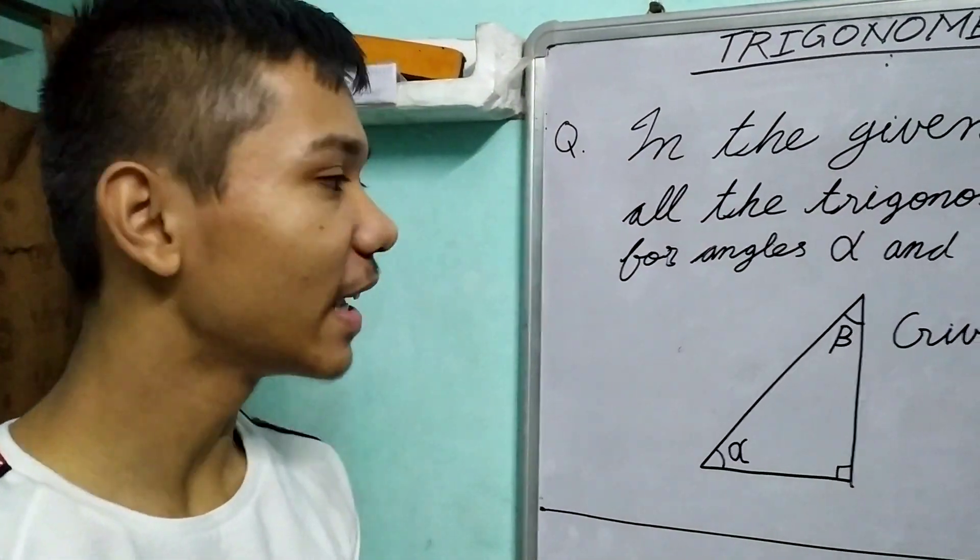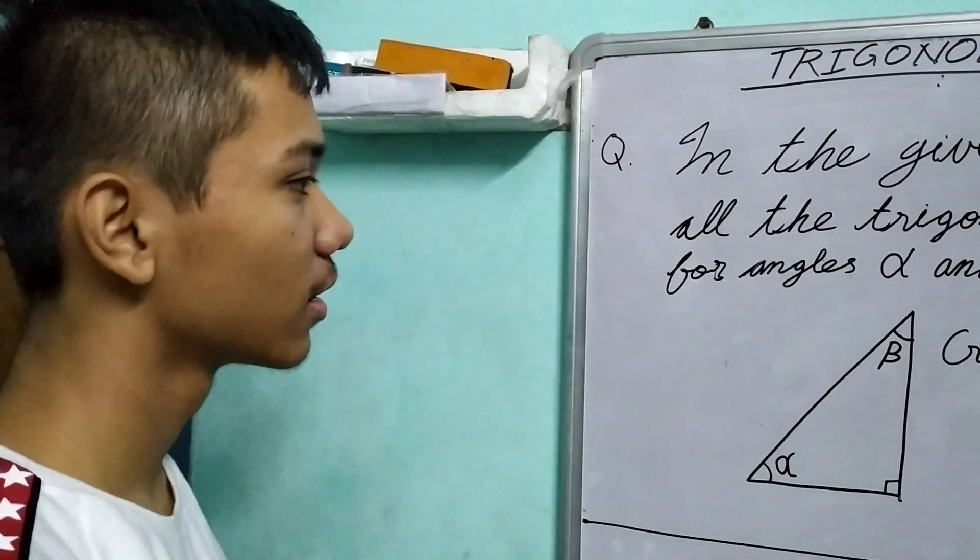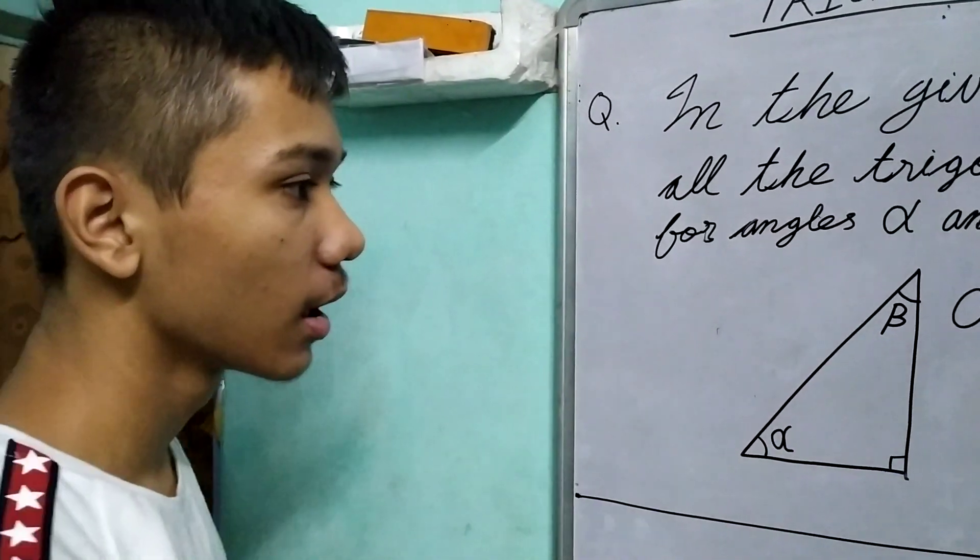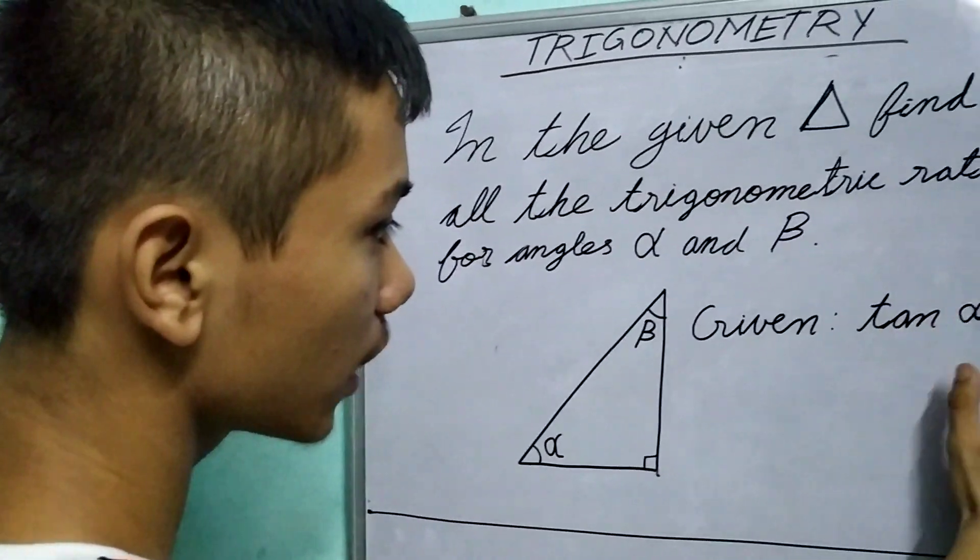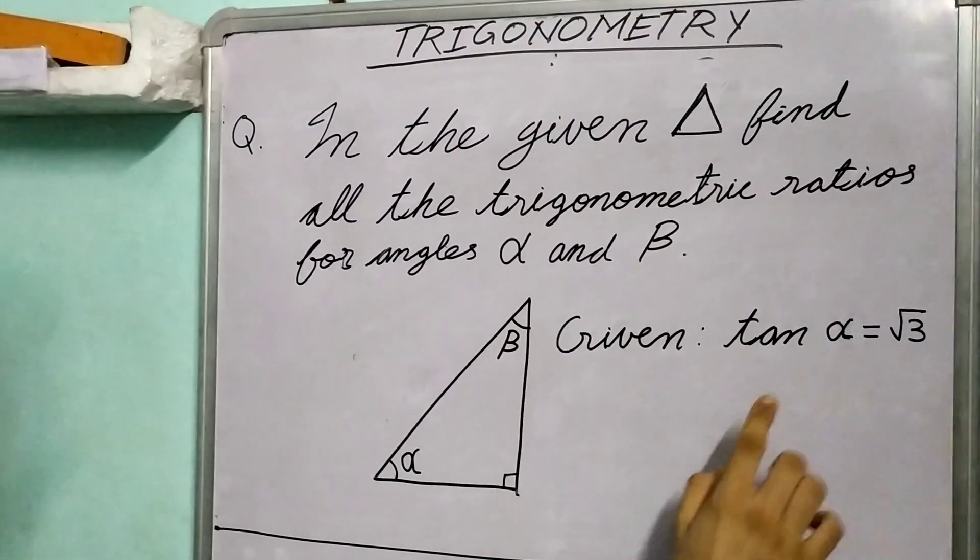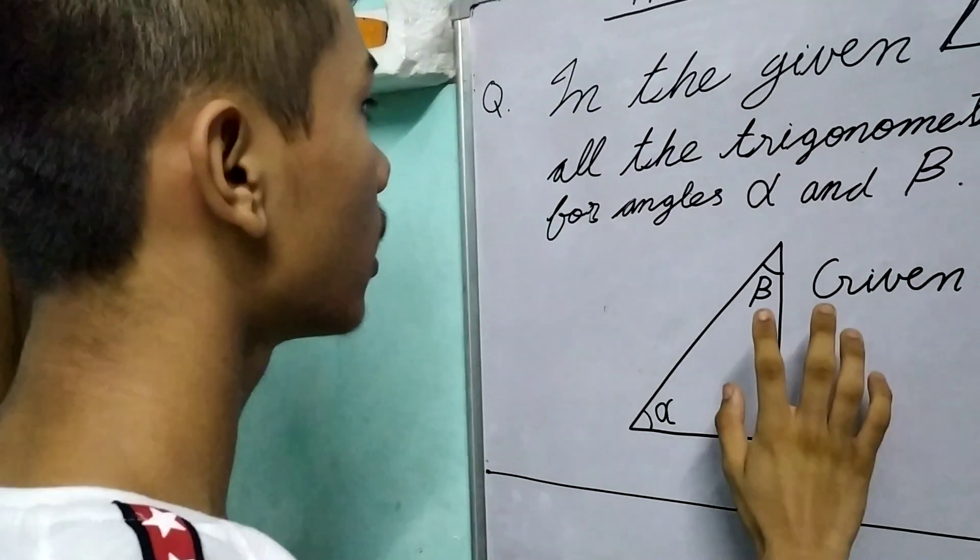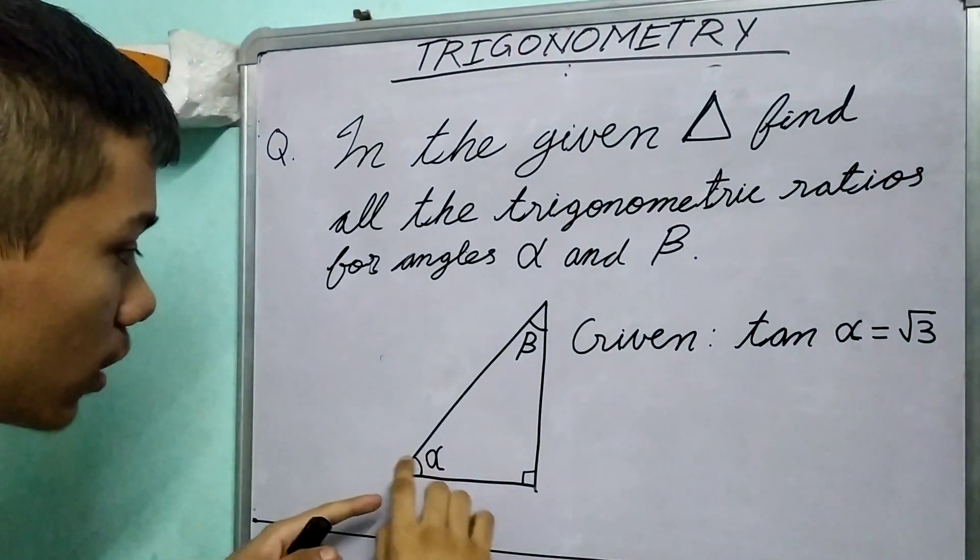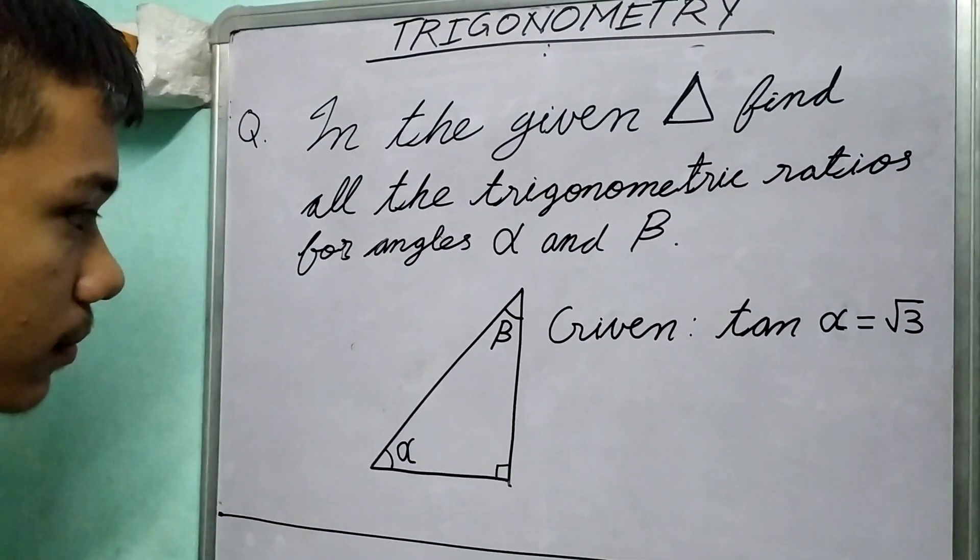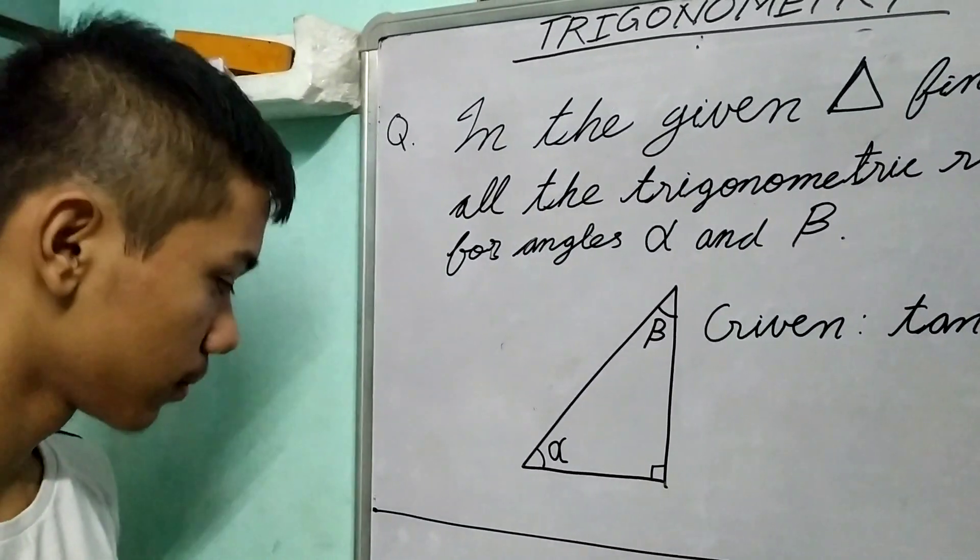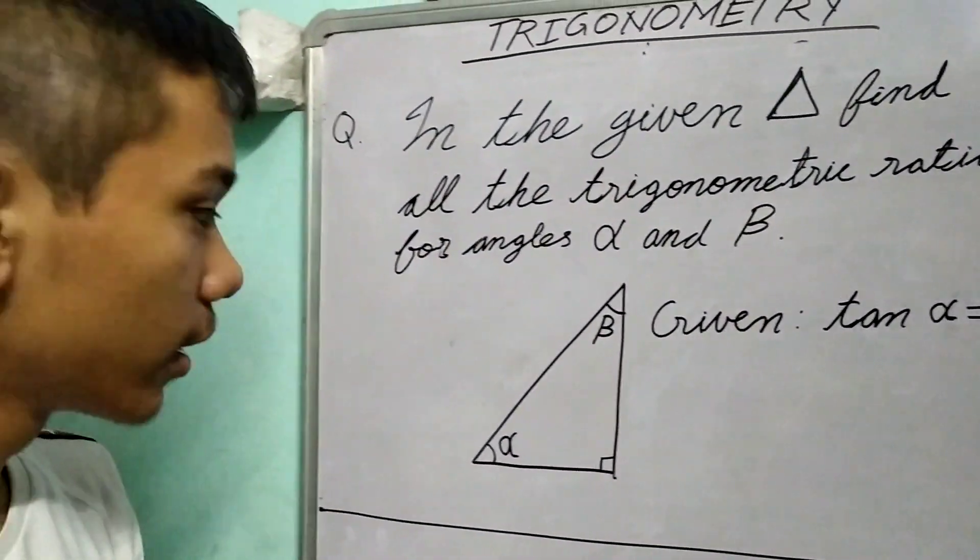Hi there! In this question, we need to find trigonometric ratios of two angles from a given trigonometric ratio. It is given that tan α = √3, and we need to find all the trig ratios for α and β. I hope you went through it. Let's do this together.